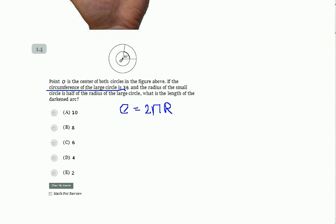The radius of the small circle is half of the radius of the large circle, which means that we have this small circle and its radius r is half of the radius of the large circle. Then we ask what is the length of the darkened arc, the length of this part of the small circle.